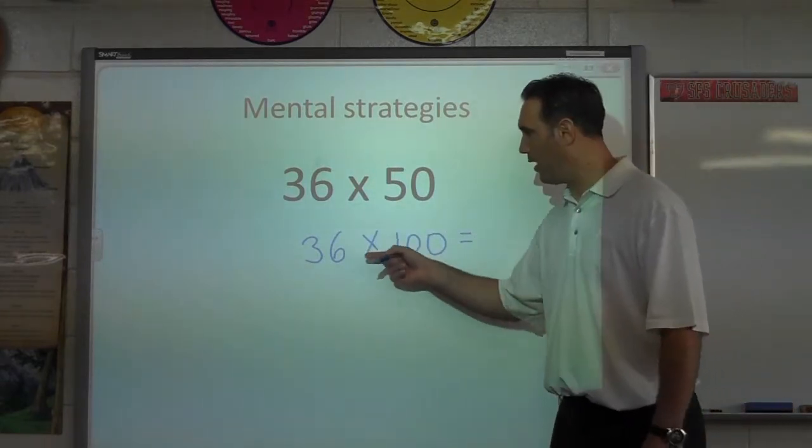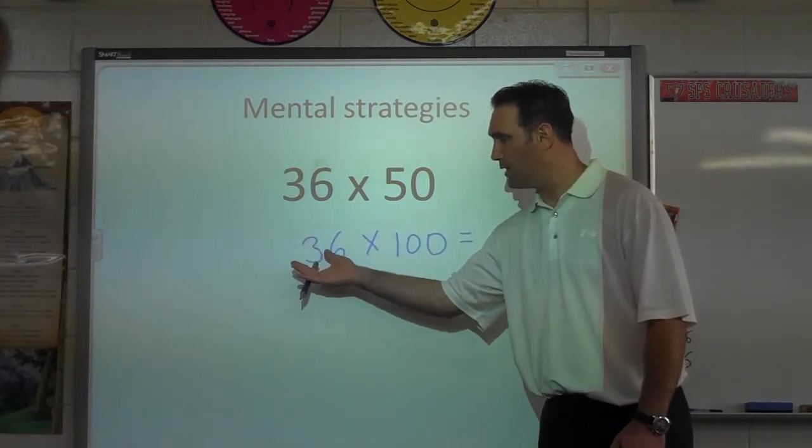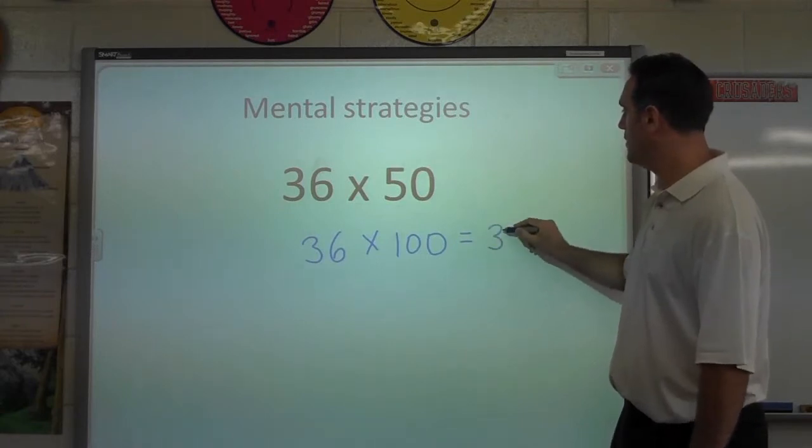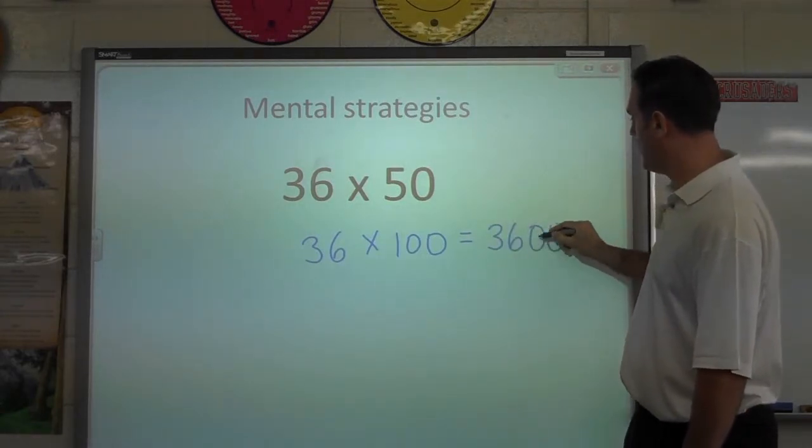Now when we times by 100, we ask the students to move the digits two places to the left and insert the zeros. So you'll probably realize the answer will be 3600.